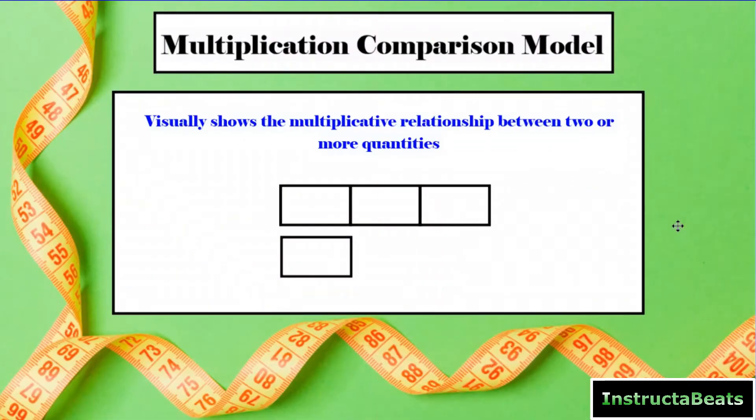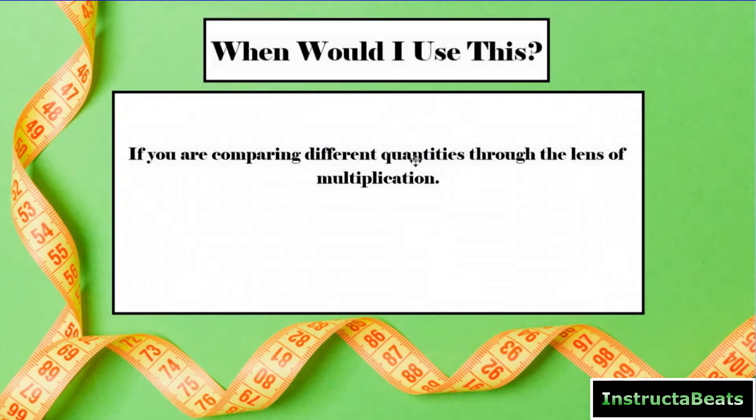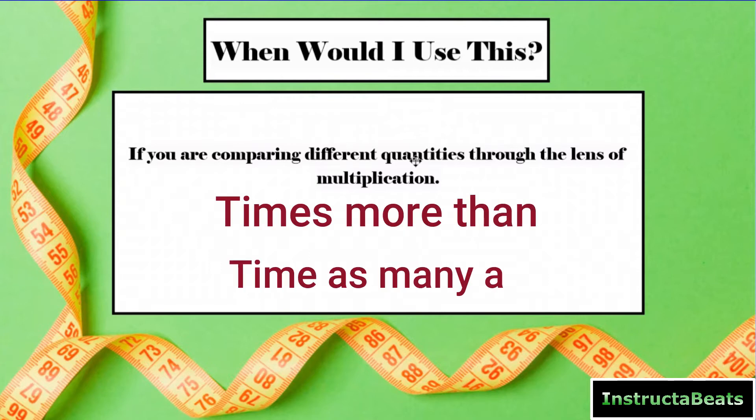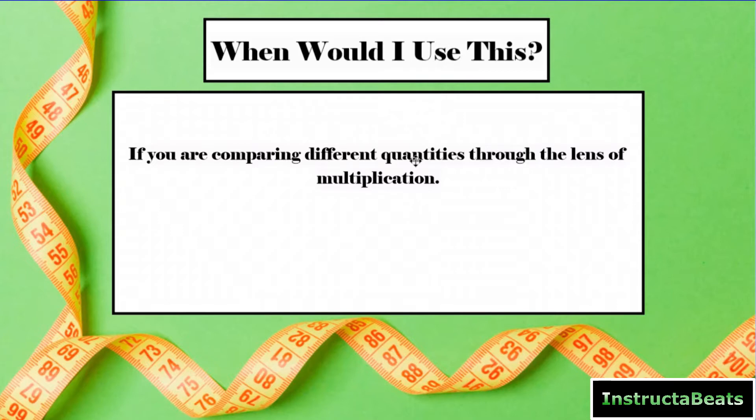If you've been with us, we covered this last lesson. A multiplicative comparison model visually shows the multiplicative relationship between two or more quantities. You would use it if you're comparing different quantities through the lens of multiplication. Typically you'd see it when you say 'times more than' or 'times as many as'. They want you to compare groups of things, not addition-subtraction.